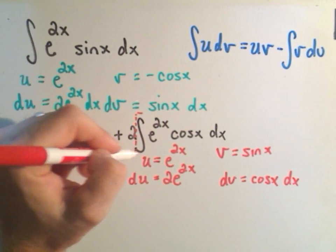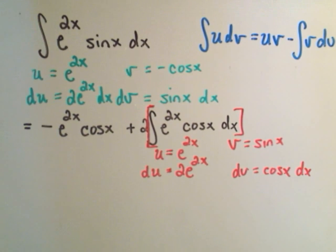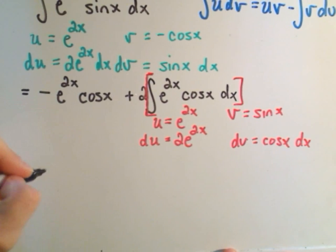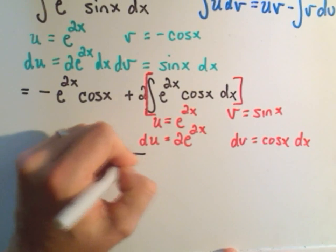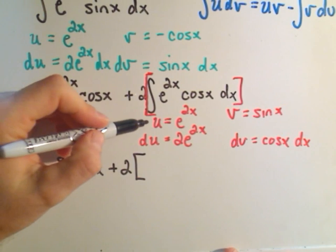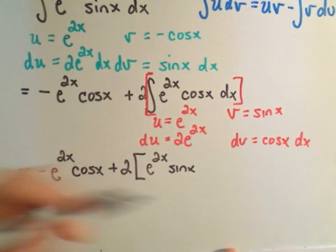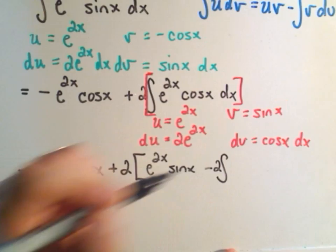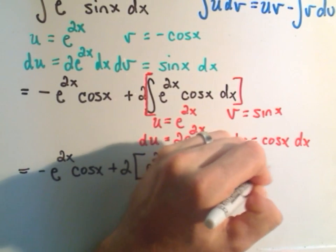Okay, so again, I'm going to put my integral in some brackets here, just so I distribute things properly here in just a second. So the first part we're done with, again, just kind of comes along for the ride here a little bit. So it says we'll get negative e to the 2x cosine x plus 2 times the integral of u times v. So I'll get e to the 2x times sine x minus the integral of v, which is sine x, times du. Again, I'm going to pull the 2 out front. So we'll get 2e to the 2x times sine x dx.